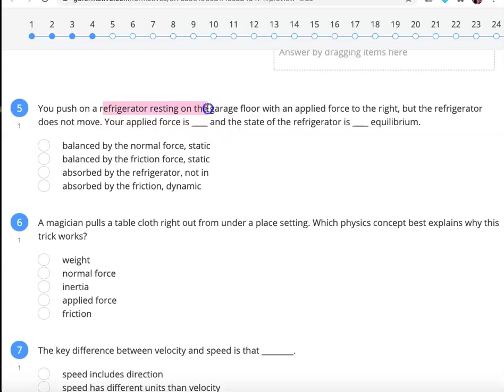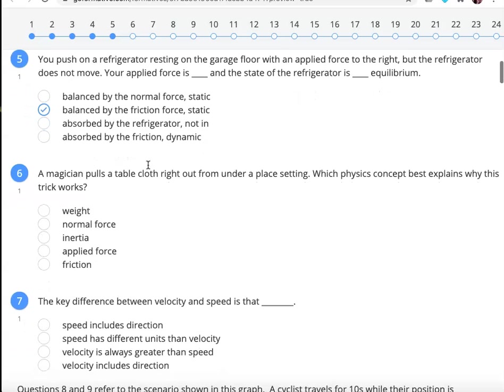In this case, I'm pushing a refrigerator on a garage floor with an applied force to the right and the refrigerator doesn't move. I'm choosing between A and B because these are both talking about static friction. Your applied force is balanced by the friction force because right cancels left. Your applied force is to the right and your friction force is to the left. It's not canceled by normal force. It's not the force that goes right is canceled by the force that goes up. That doesn't make sense. So it's B.